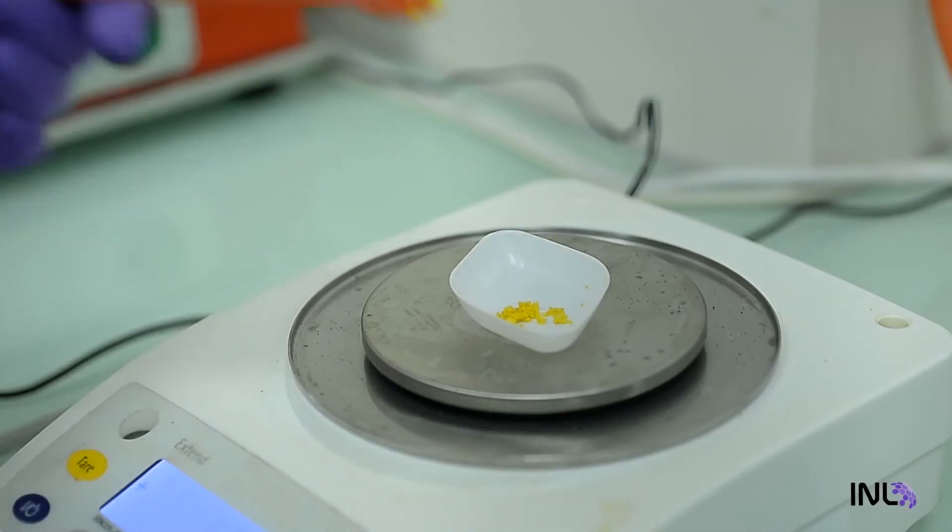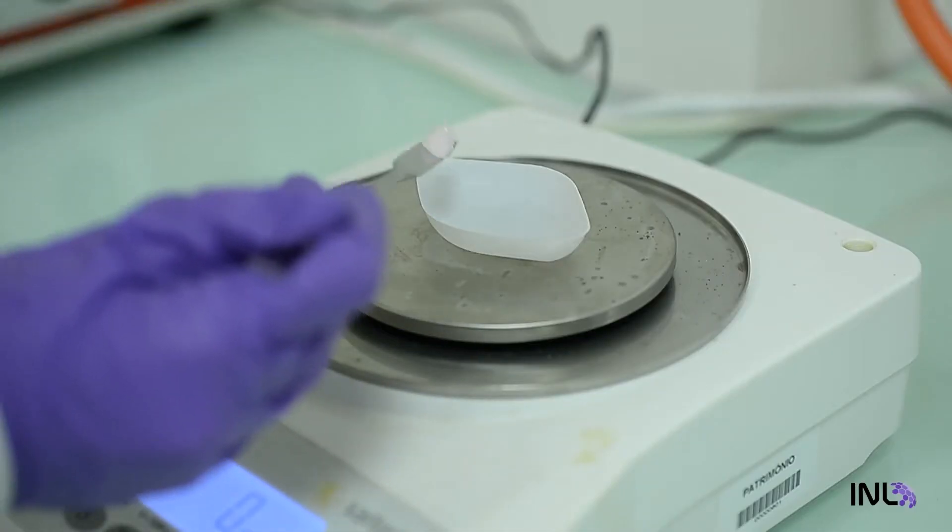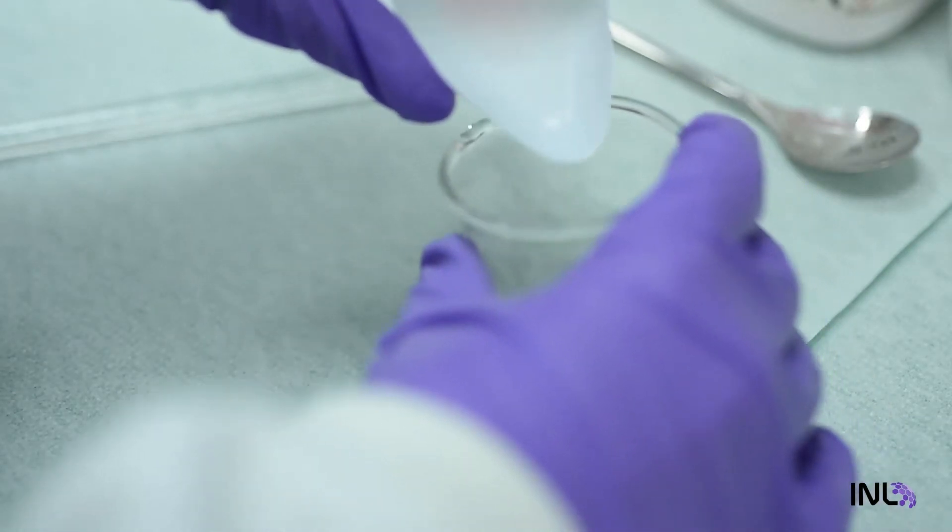Iron oxide is the same material that forms when iron rusts, but it can be prepared in nanoparticle form by cooking a mixture of chemical ingredients at high temperature for a few hours.